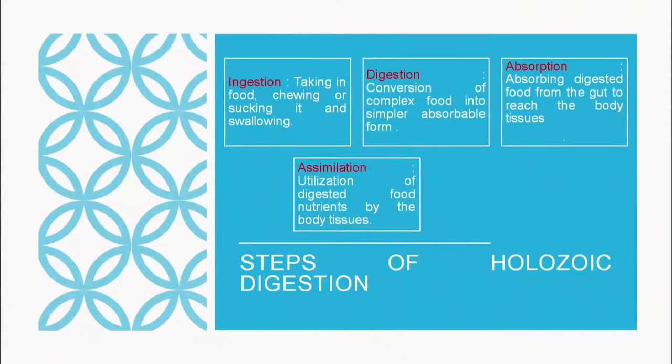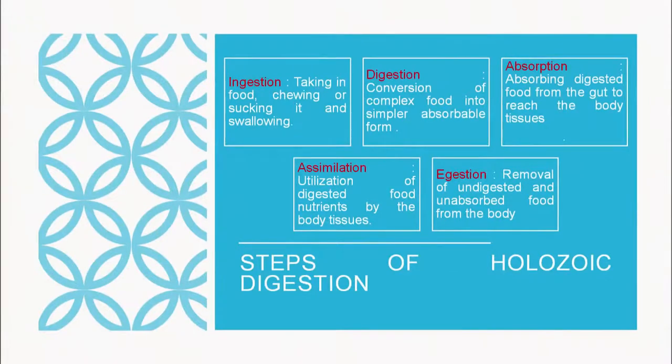The next step is assimilation — the utilization of digested food nutrients by the body tissues. Once absorbed material reaches the cells, further breakdown takes place to release energy or for body-building processes. The last step is egestion — removal of waste or undigested food from the body. Fibers play a very important role in egestion, so your diet should always be rich in fibers for proper digestion.